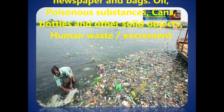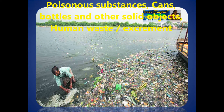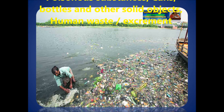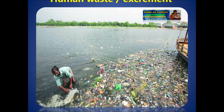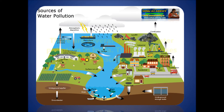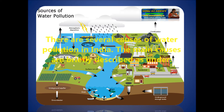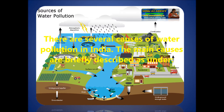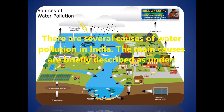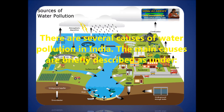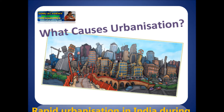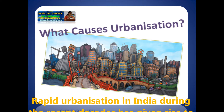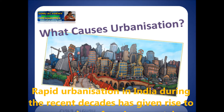Human wastes and other materials can be thrown in the water and cause water pollution. There are several causes of water pollution in India. The main causes are briefly described as follows. The first cause is urbanization.